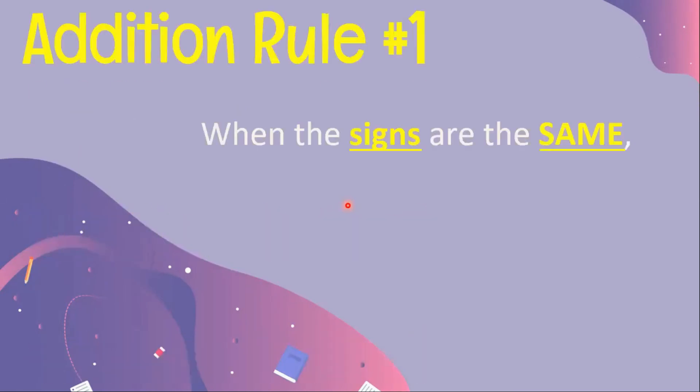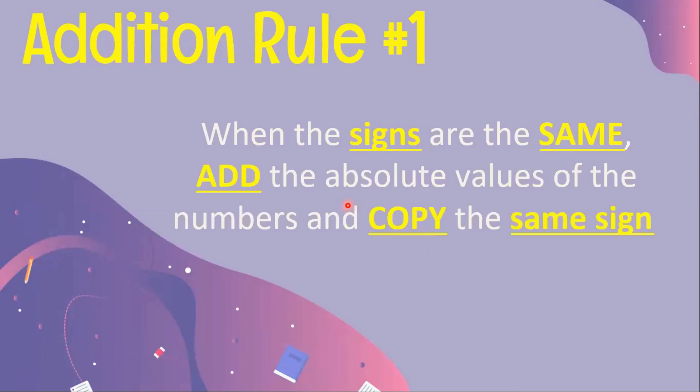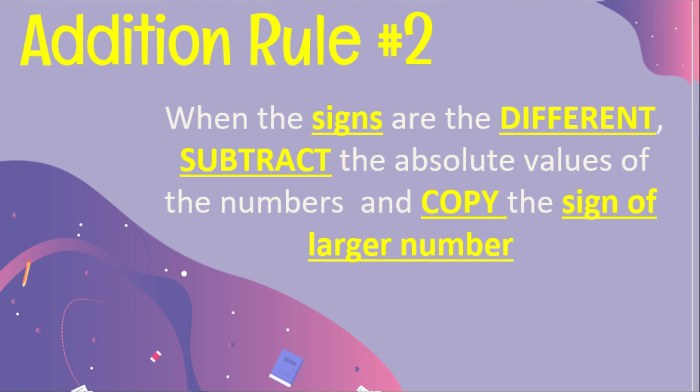Based on the given examples, we can conclude the following rules for addition of integers. Rule 1: when the signs are the same, add the absolute values of the numbers and copy the same sign. Rule 2: when the signs are different, subtract the absolute values of the numbers and copy the sign of the larger number.